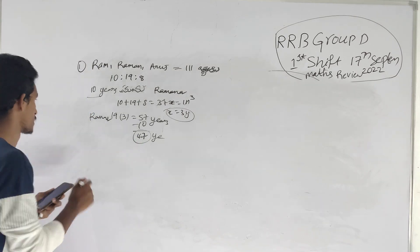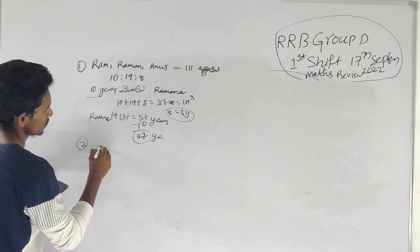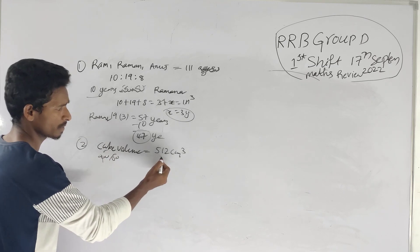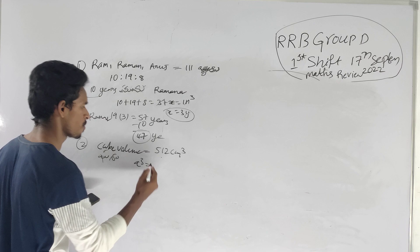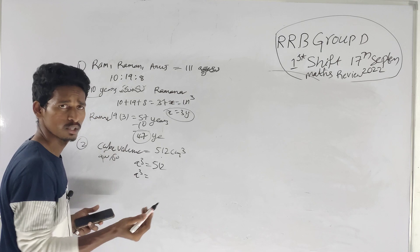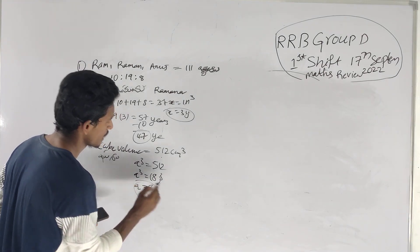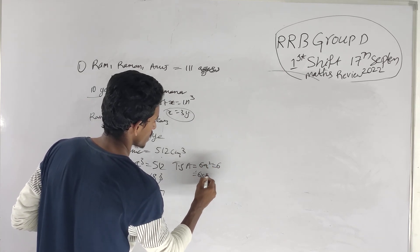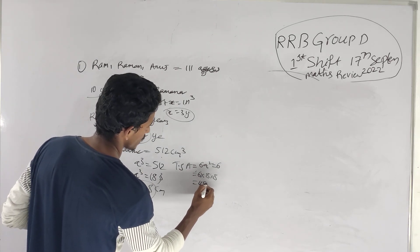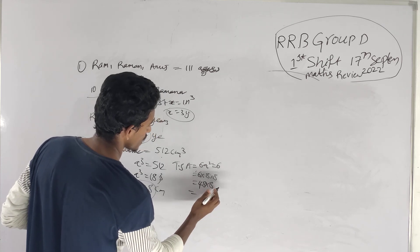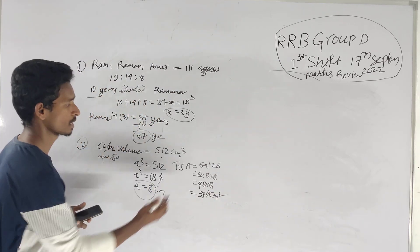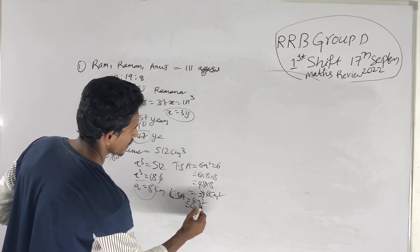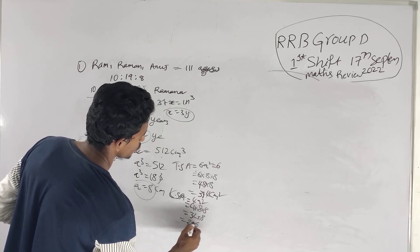Next, the second problem: a cube has volume 512 cm³. So a³ = 512, which gives a = 8 cm. The total surface area formula is 6a². So 6 × 8 × 8 = 384 cm².